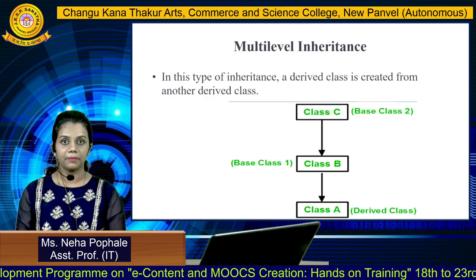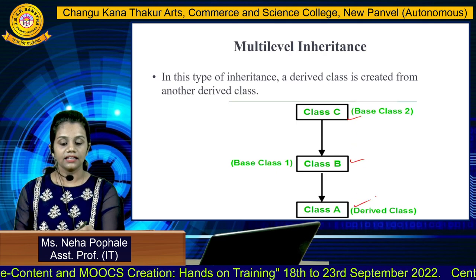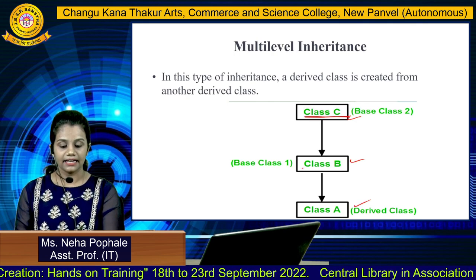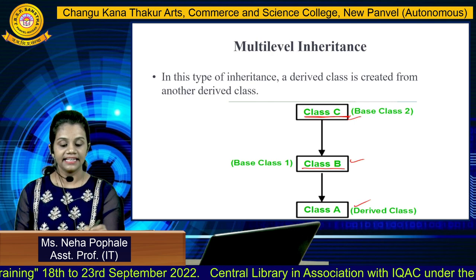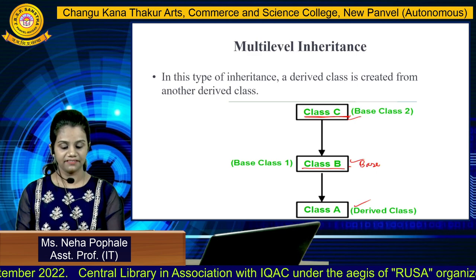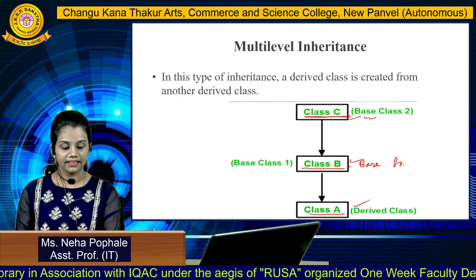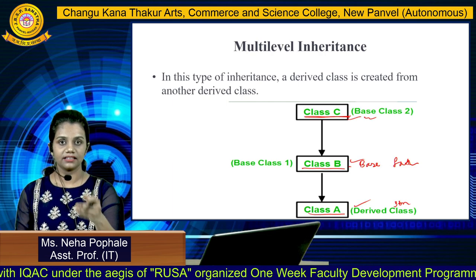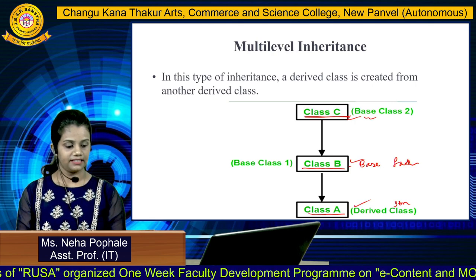Next we have multilevel inheritance. Here we can see there are different levels. In the example, class C is acting as a base class and class B is acting as a derived class. But now class B will become a base class for the derived class A. This is somewhat like grandfather, then father, and then son. Some class will be a derived class for one class and also a base class for another derived class.